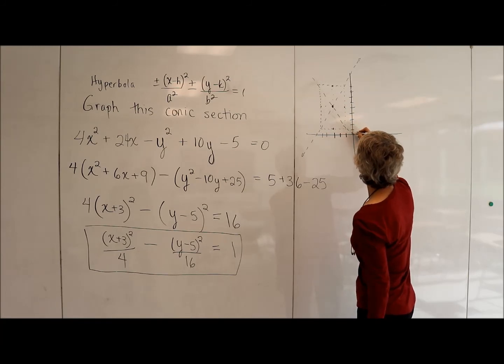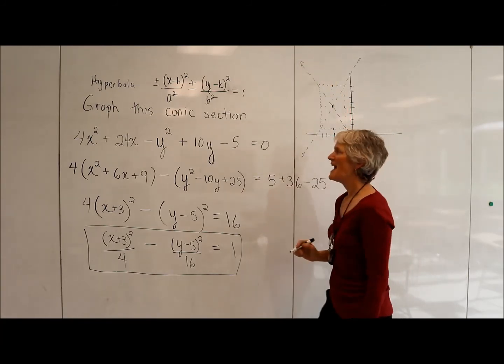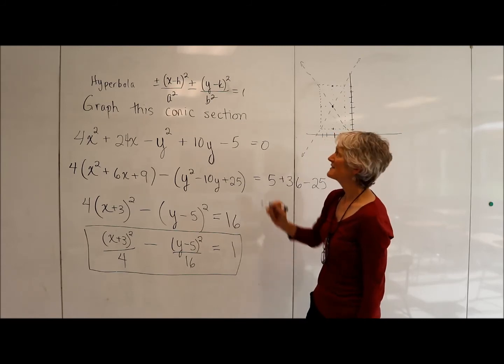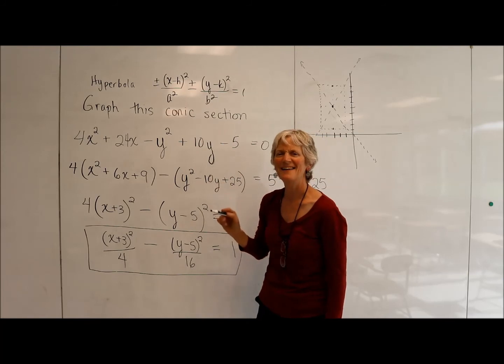Because really, what I'm doing, if you think about the slope of those slant asymptotes, it's going to be plus or minus b over a. Isn't that cool?